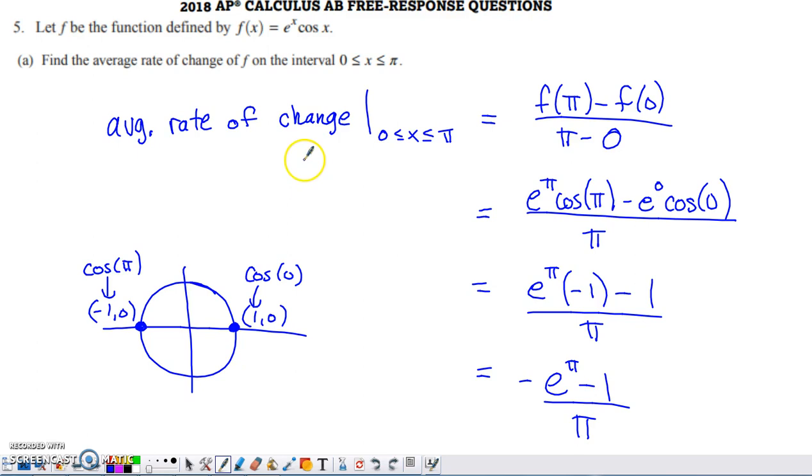An average rate of change is simply a slope calculation using the endpoints of the interval that's specified. I need to take the difference in function values at the endpoints divided by the corresponding difference in x values.